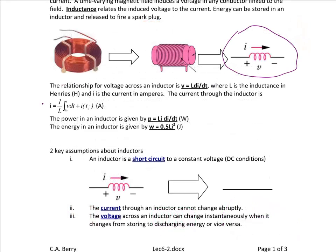Note that energy stored in an inductor can be used to release and fire a spark plug. For the formula V equals L dI/dt, L is the inductance in Henrys, I is the current in amperes, and T is the time in seconds.